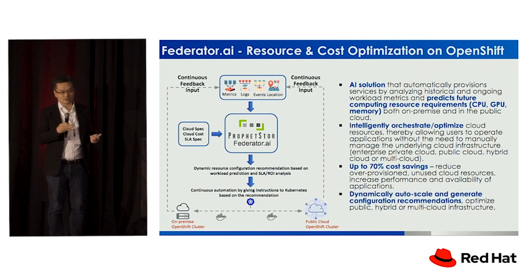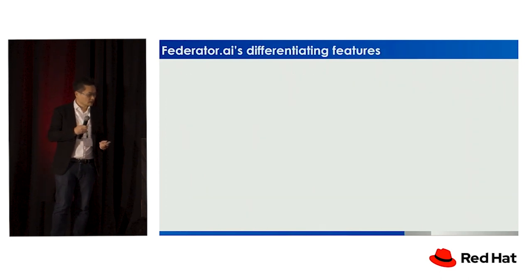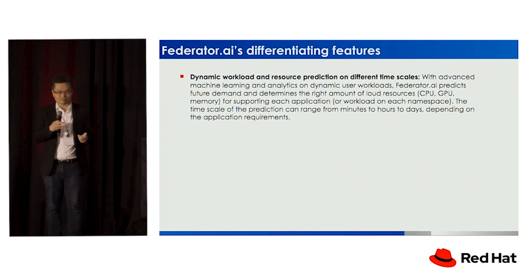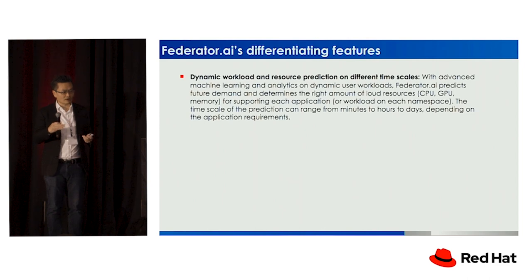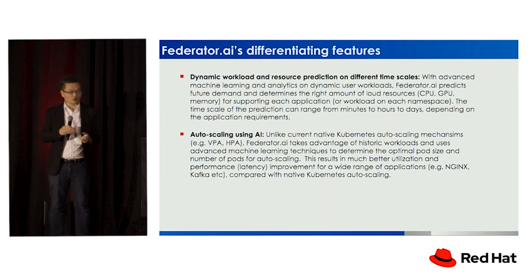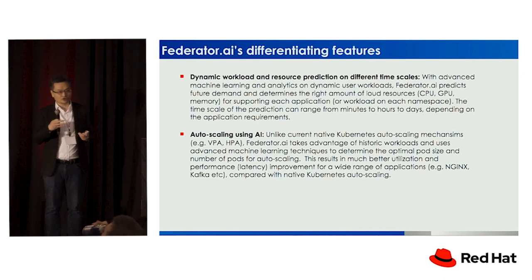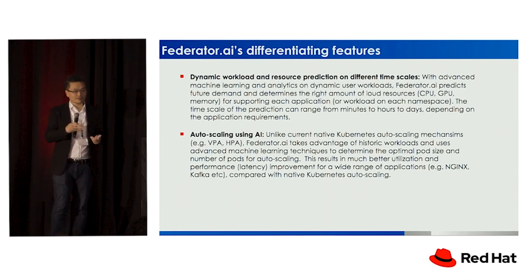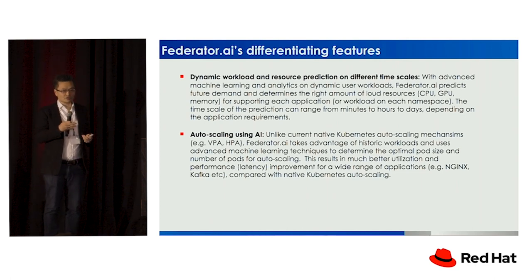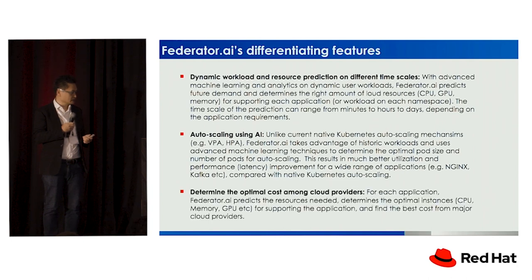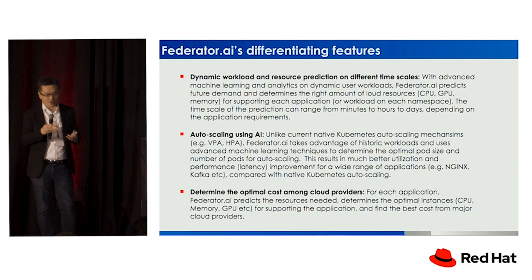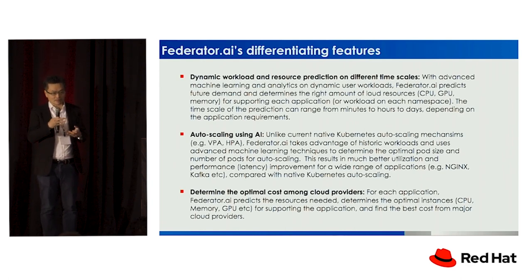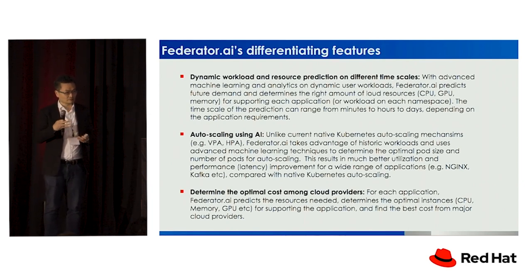We do this dynamically and continuously on all workloads across different timescales — the next hour, next 24 hours, next seven days, or next month. We also do auto-scaling on AI. Native Kubernetes already has horizontal pod auto-scaling (HPA) and vertical pod auto-scaling, but they are done in a very primitive way. We have our own mechanism using AI and machine learning on workload that can do a much better job. And based on understanding the workload per application or per cluster, we can determine the best cost solution from Amazon, Microsoft, or Google.